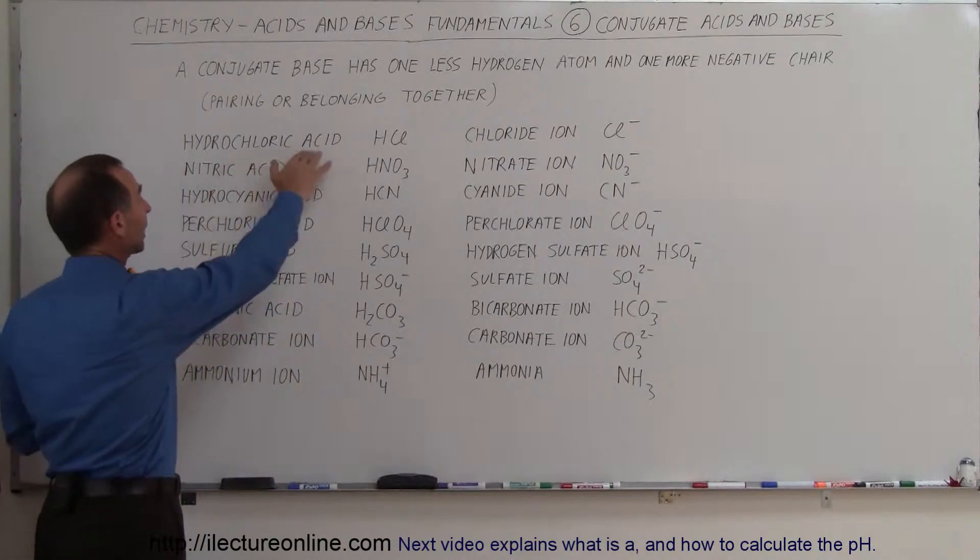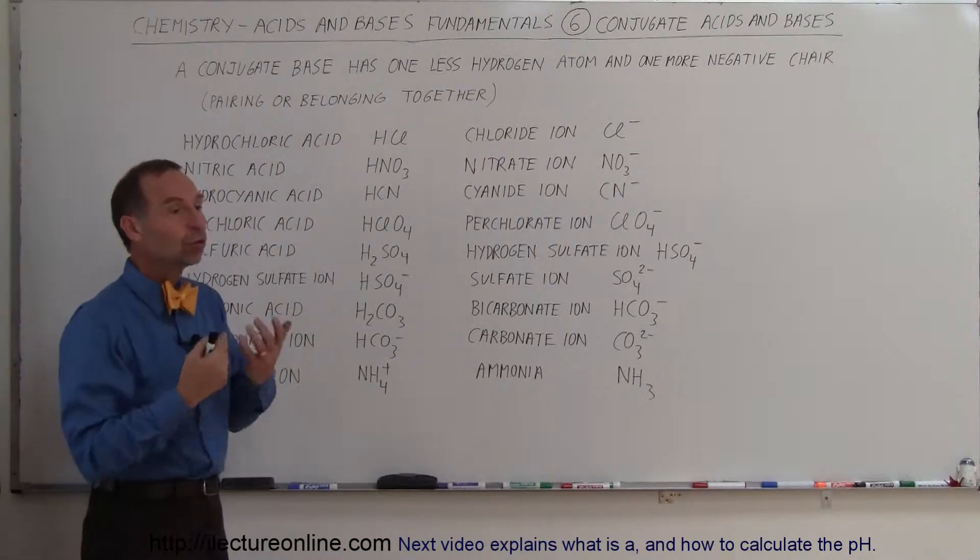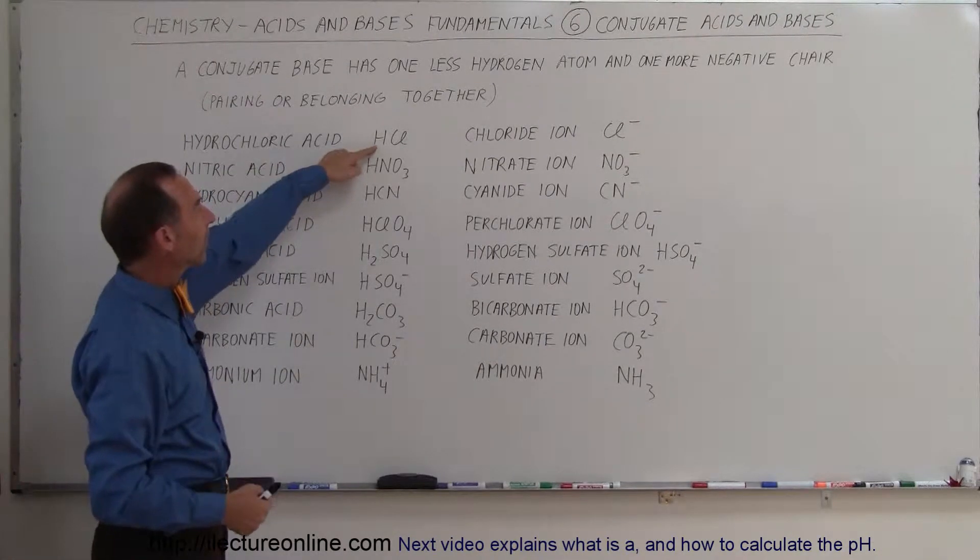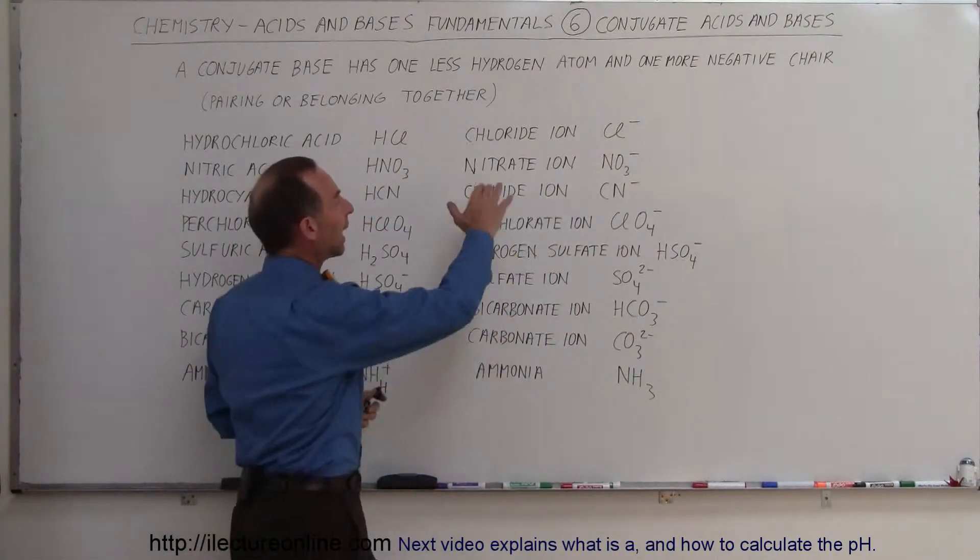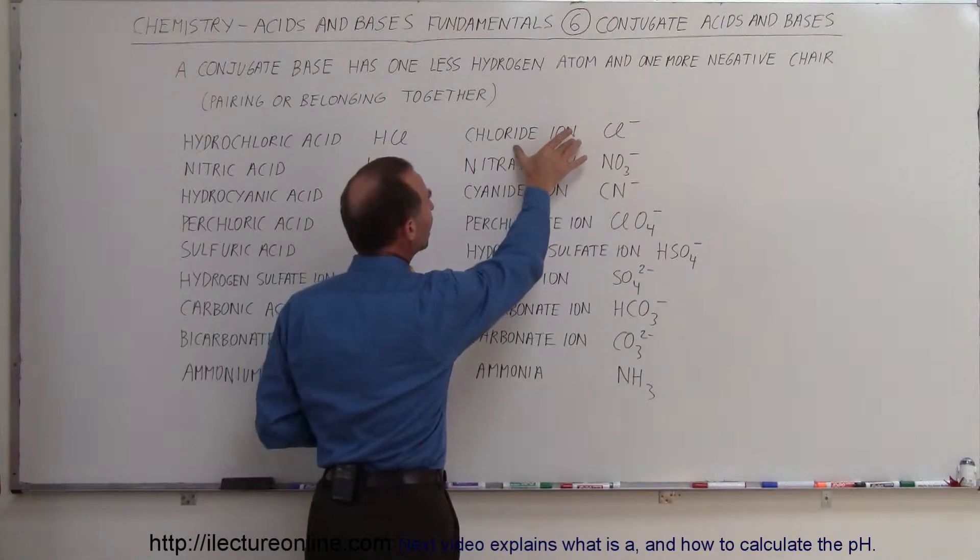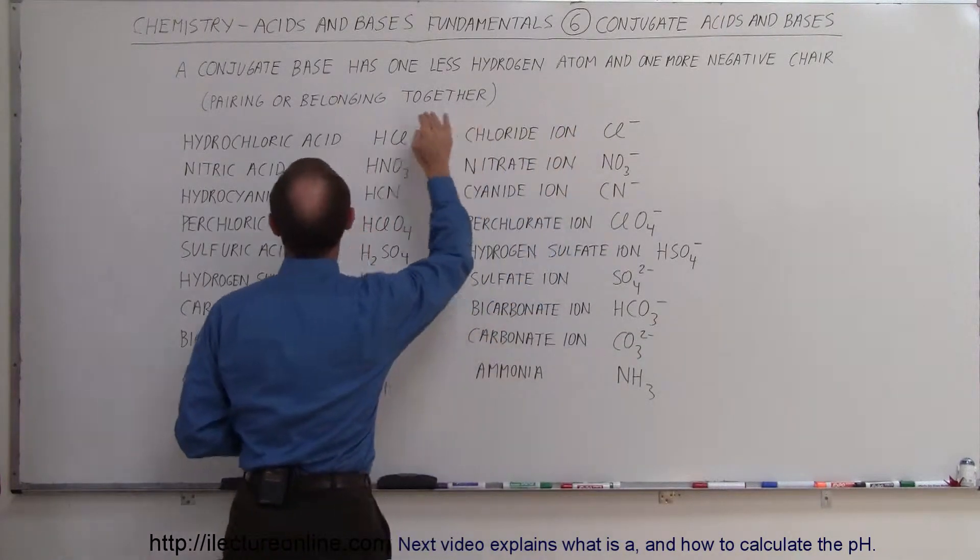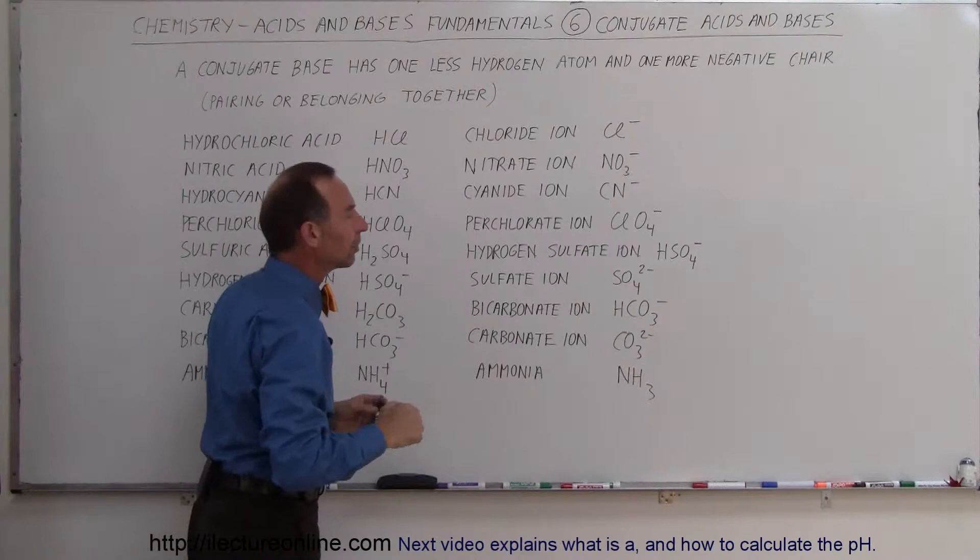So what happens, for example, when you take hydrochloric acid and you put it in solution? It separates the hydrogen from the chlorine, and so you end up with a chlorine ion. And then the chlorine ion is considered to be the associated base to the hydrochloric acid, HCl.